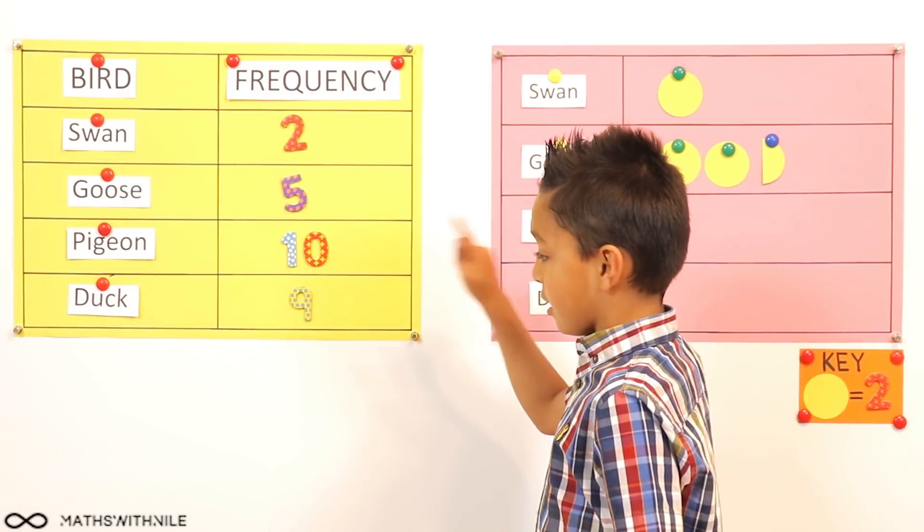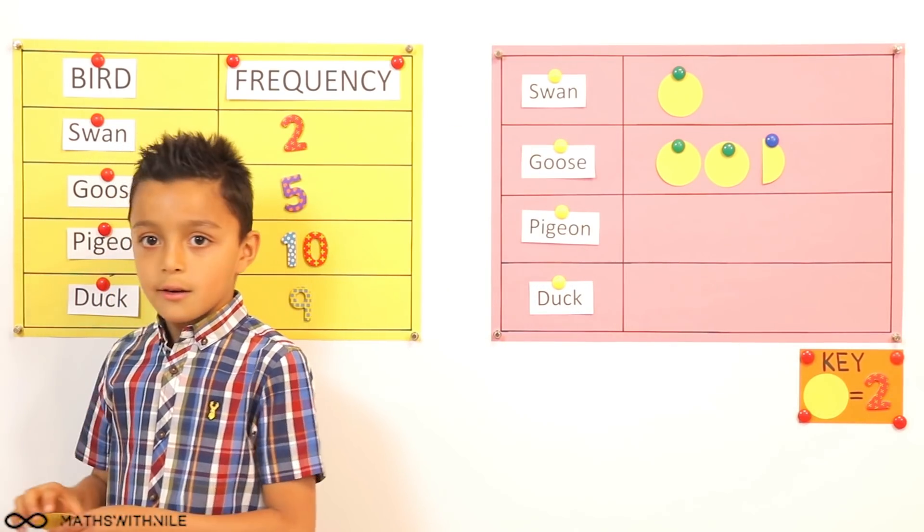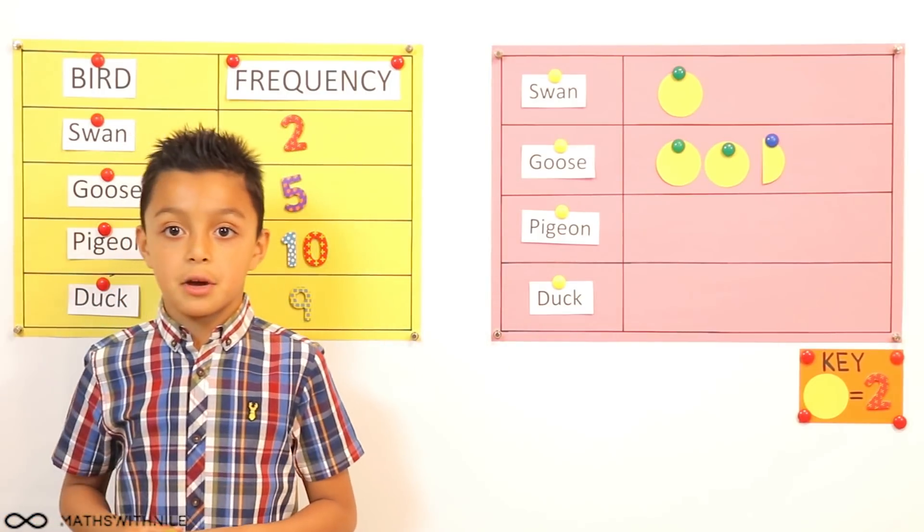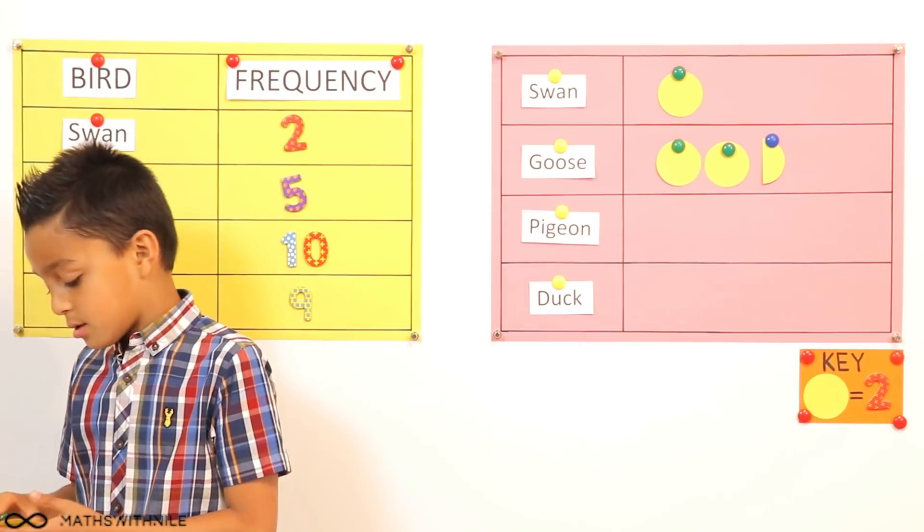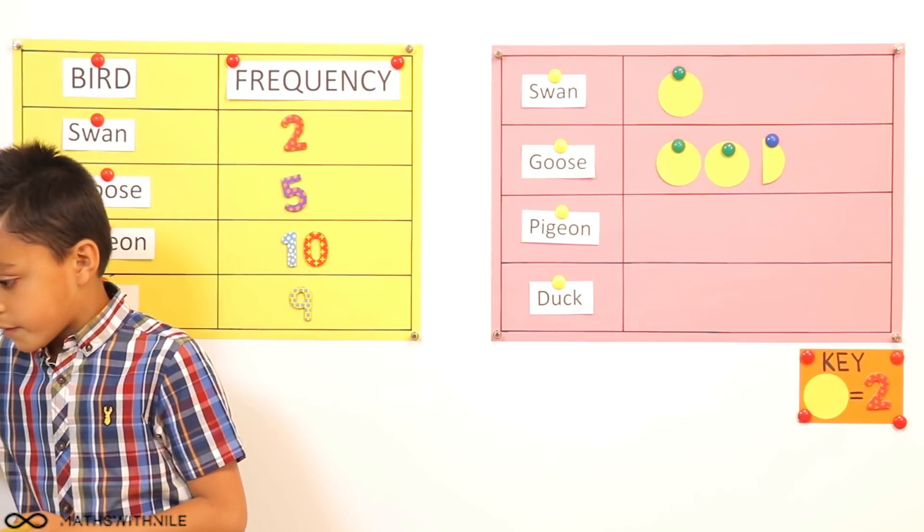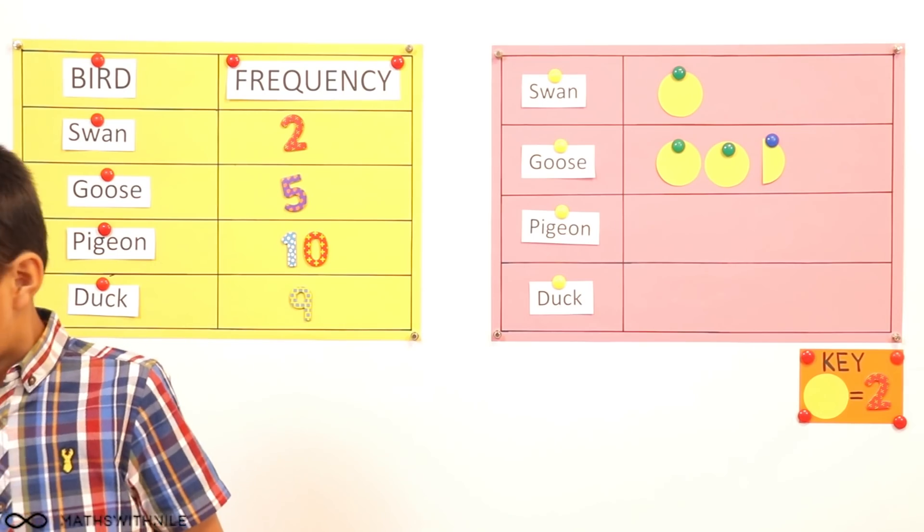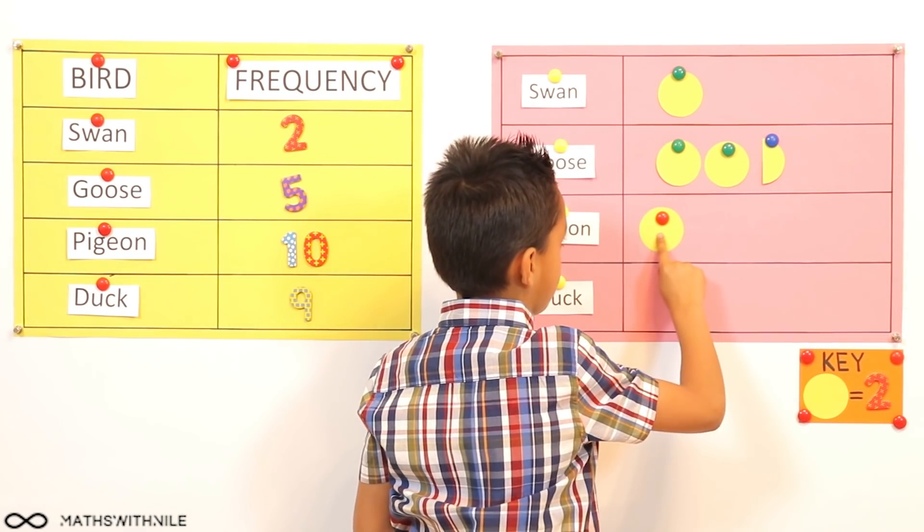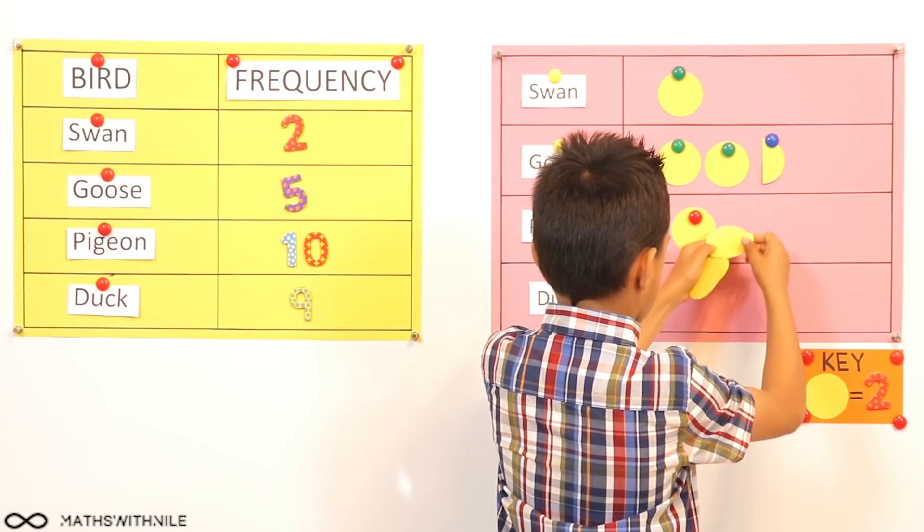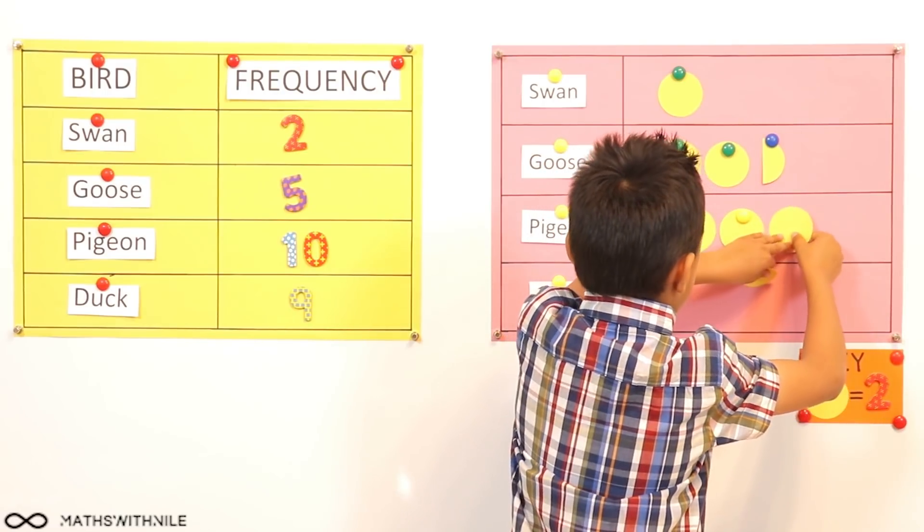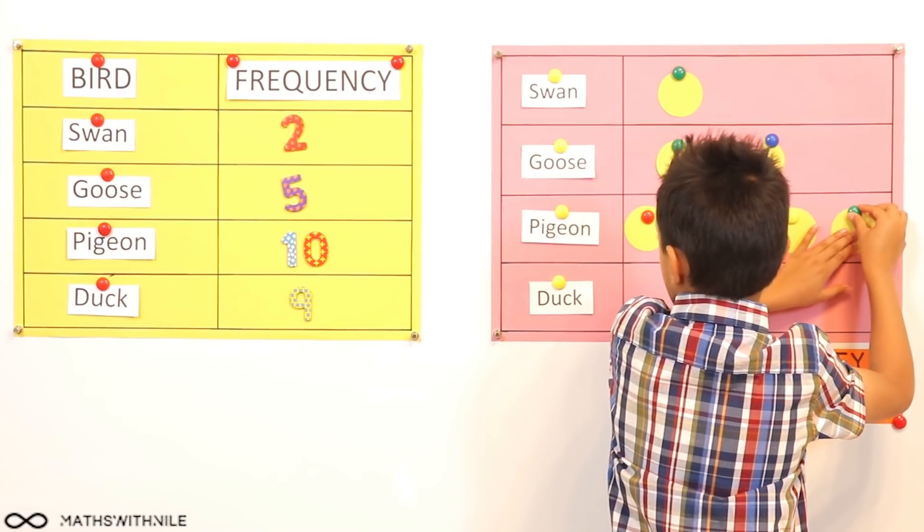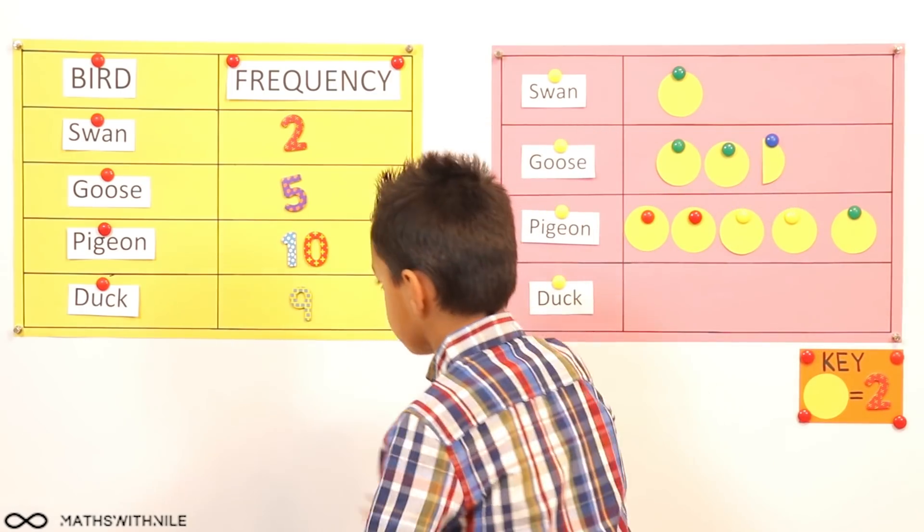It says pigeon has ten, so we could, let's do two. How many circles are you going to use? Five. Because? Because five times two equals ten. Okay, good. So you can grab the five circles. One, two, three, four, five. Now I need five magnets. Here's our first two. Two, four, six, eight, and finally ten. Very good. Two, four, six, eight, ten. So that's the pigeons.